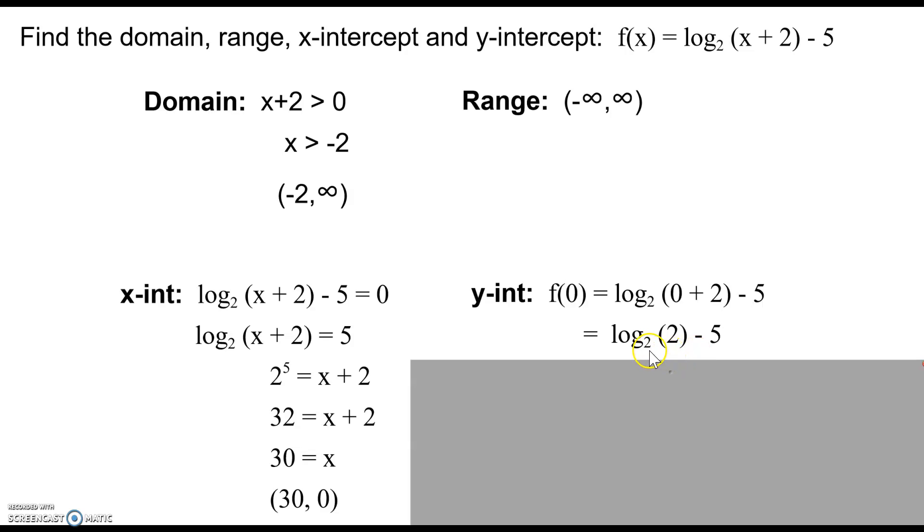Well the answer to that is going to be what exponent do I put on the base here of 2 to get this answer here of 2? Well 2 to the first is 2, so my answer would be 1 and then minus 5. Final answer there is negative 4. Again I want to give an ordered pair on my graph, so in this case it would be (0, -4).